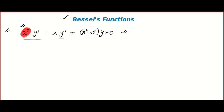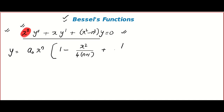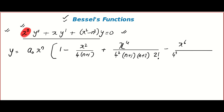You can try to solve the equation yourself because I am going to give only the important part from an exam point of view. When you solve Bessel's equation, you will see that the two solutions are: a₀ x^n times [1 − x²/(4(n+1)·1!) + x⁴/(4²(n+1)(n+2)·2!) − x⁶/(4³(n+1)(n+2)(n+3)·3!) + ...]